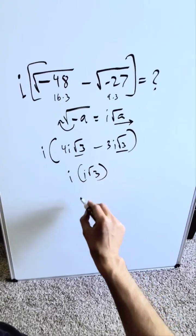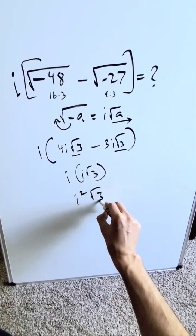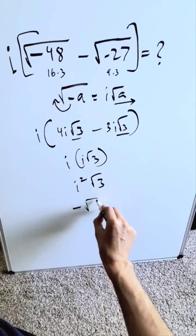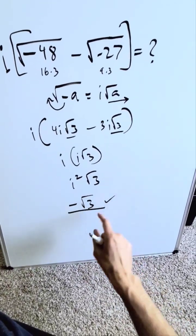And don't forget this i sitting outside. Open it up, you have i square root 3. We know i square is equal to minus 1. My end result here is minus root 3, and this here should be the correct answer.